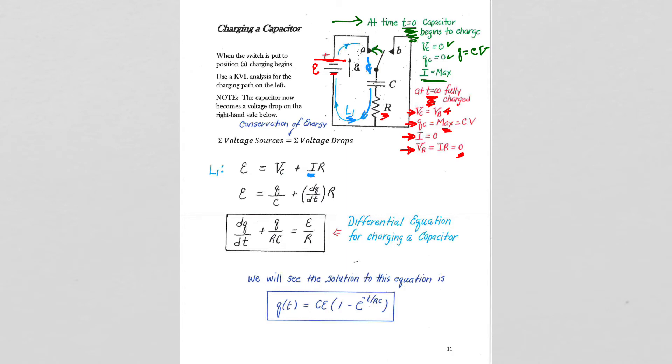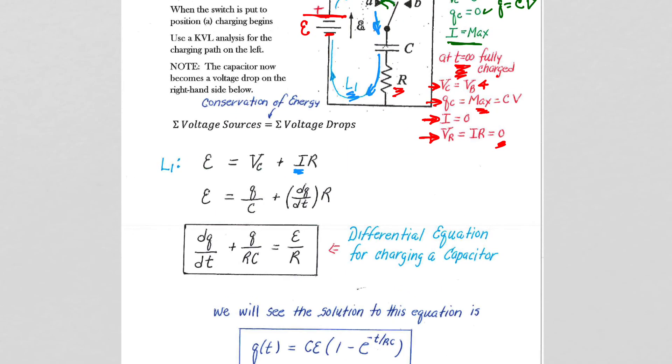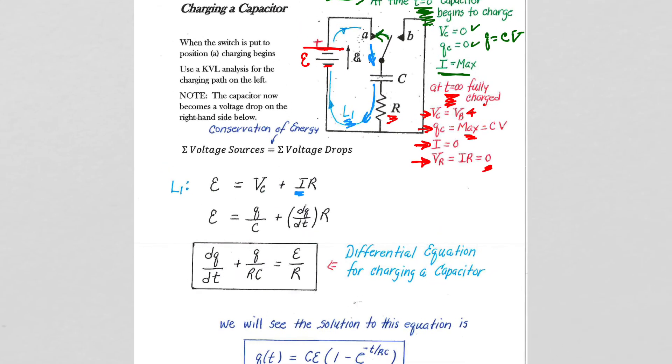Sum of the voltage sources: now the battery is the only voltage source. The capacitor, that back voltage, will act as a voltage drop, so that's q over C. And the voltage drop across the resistor is IR. So fundamentally this is our loop equation: sum of the voltage sources equals sum of the voltage drops.